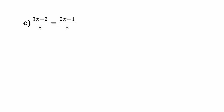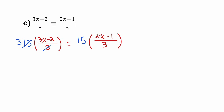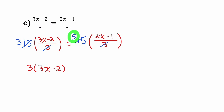So I would multiply both sides of this equation by 15, because it will eliminate both fractions. On the left, I have 15 divided by 5, which is 3. And on the right, I have 15 divided by 3, which is 5. So on the left, I have 3 times 3x minus 2, and on the right, I have 5 times 2x minus 1.